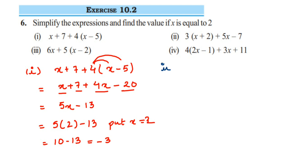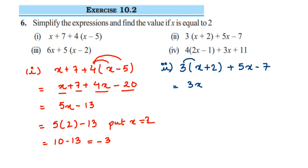I hope that's clear. We just simplify, and when we can't simplify further, we stop and substitute x equal to 2 in the expression. So the second question is 3 into (x plus 2) plus 5x minus 7. Open the bracket: 3 into x is 3x, plus 3 into 2 is 6, plus 5x minus 7. Add the like terms: 3x plus 5x is 8x, and 6 minus 7 is minus 1.